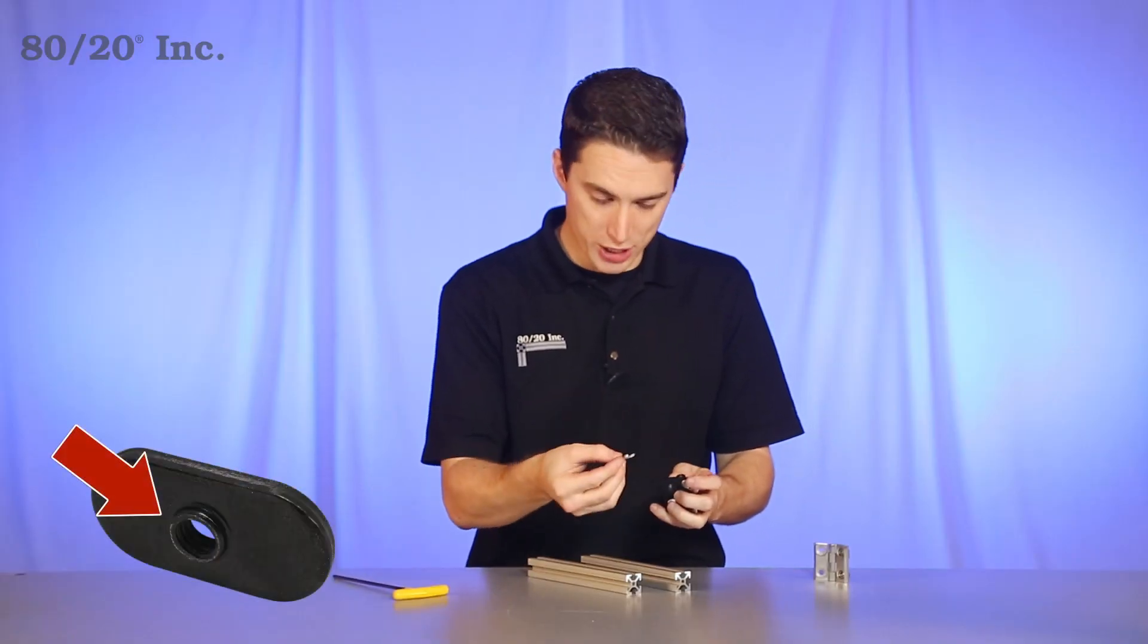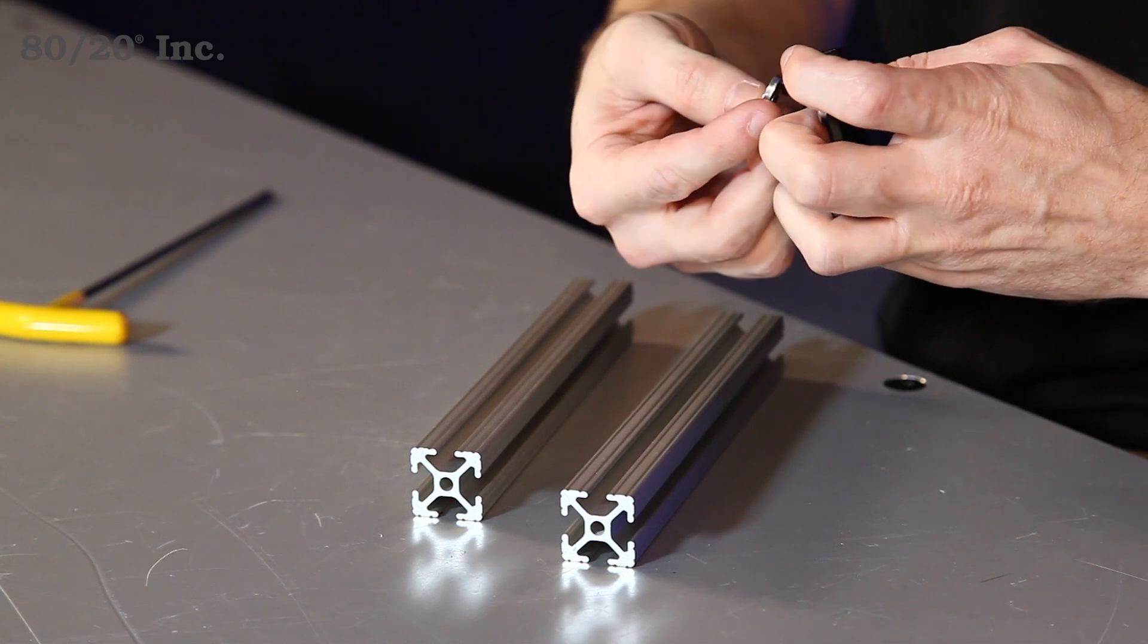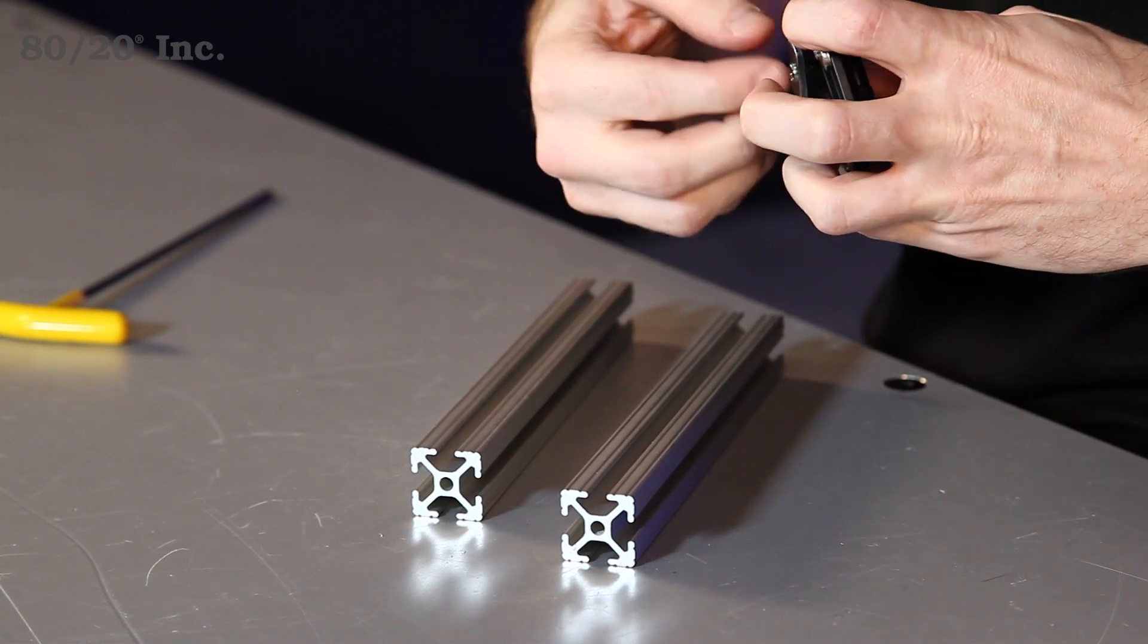Now the T-nut has a pilot projection on it that you're going to want to face downwards or away from the hinge when you put it on. So we'll slide that right on.